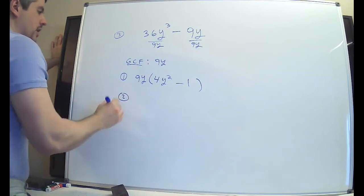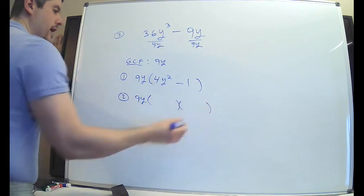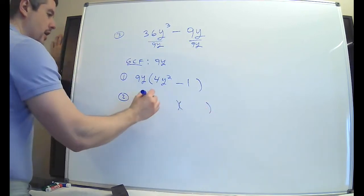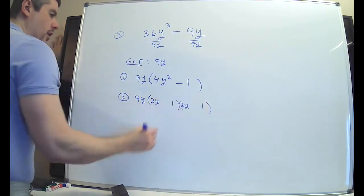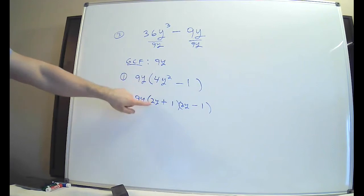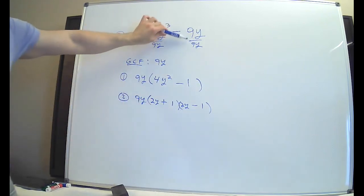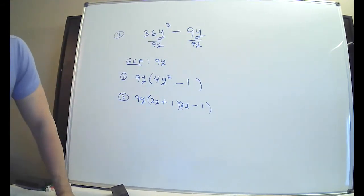So the 9y stays. Now, this is type 3. This is a difference of perfect squares. You don't put 4y and y. You put 2y and 2y. You put 1 and 1. One of them gets the plus. One of them gets the minus. All right? Type 3. Difference of perfect squares. So be very careful here. When you divide away the thing, you get a 1, right? Something divided by itself makes a 1. Very tricky question. So be very careful with it.